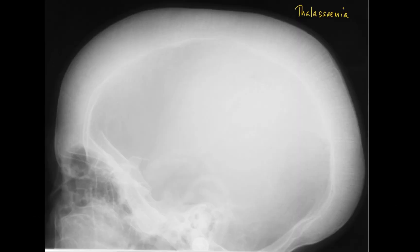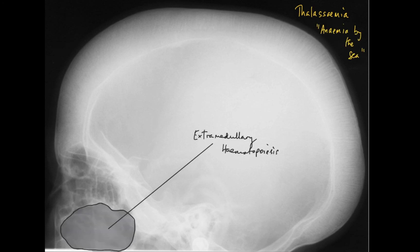This is a case of thalassemia, which when translated from the Greek literally means 'anemia by the sea.' Note also that there is extramedullary hematopoiesis manifesting as increased opacification of the maxillary sinuses.